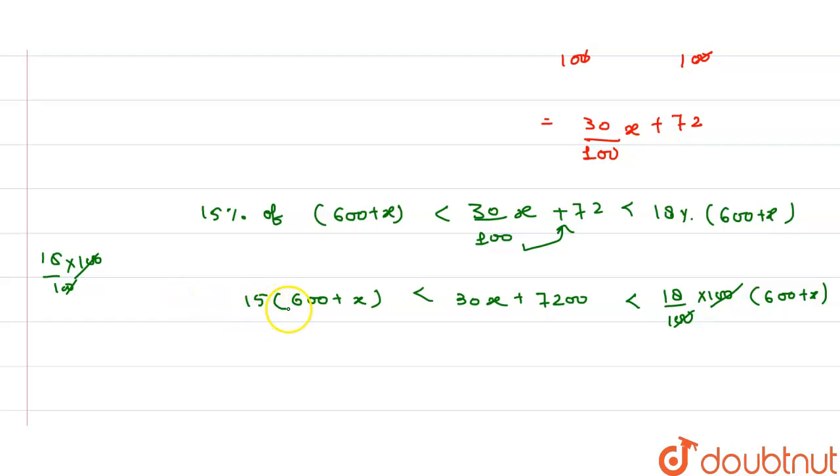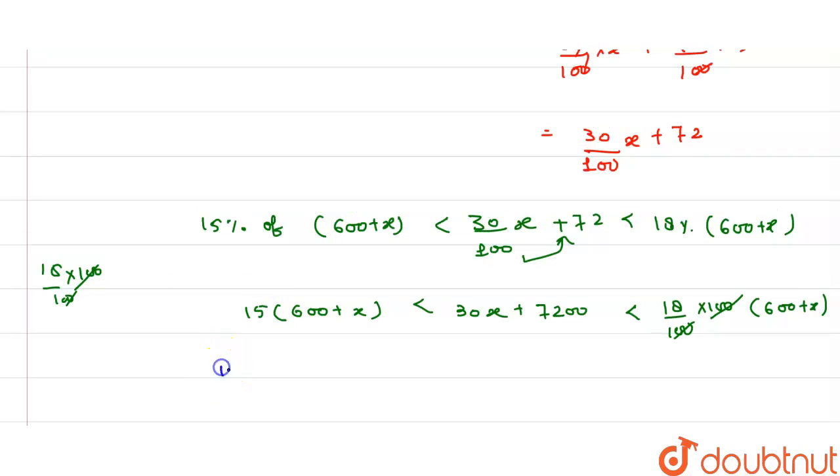Multiply 15 inside the bracket. Compare the values: 15(600 + x) is less than 30x + 7200, and 18(600 + x) is greater than 30x + 7200.